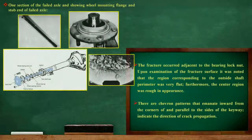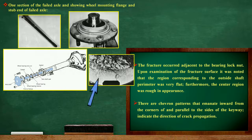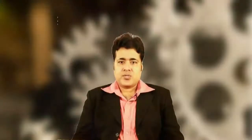Coming to the fracture surface, when we visualize with the naked eye, we can see in this slide that the periphery and perimeter region of the failed axle has a comparatively flat surface, while the center or core region has a comparatively rough surface. Secondly, there are some patterns adjacent to the key way which give us some idea about crack propagation. This is the fracture surface that we can visualize with our naked eye.